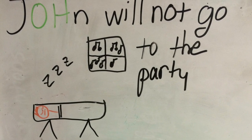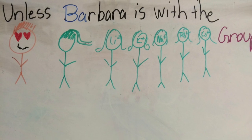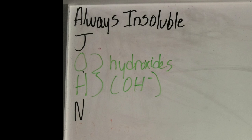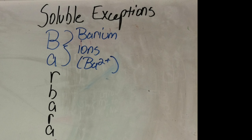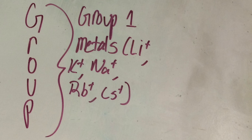Also, John will not go to the party unless Barbara is with the group. The OH in John stands for the hydroxide ion, OH with a negative charge. And the exception is Barbara, which is barium, which is BA2+, and also the group 1 metal ions of lithium, sodium, potassium, rubidium, and cesium, all with a plus 1 charge. Thank you.